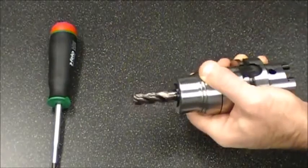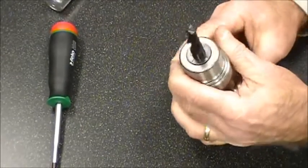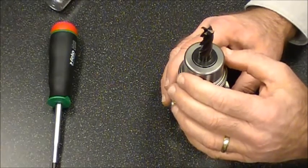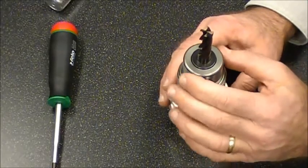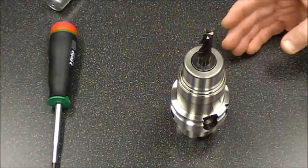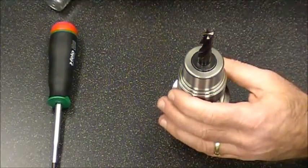That's tight at 12 Newton meters, and that end mill cannot pull out of this tool holder. You can take extremely aggressive cuts with the confidence the end mill cannot pull out. Now to reverse the process when the end mill needs to be changed because it's worn.